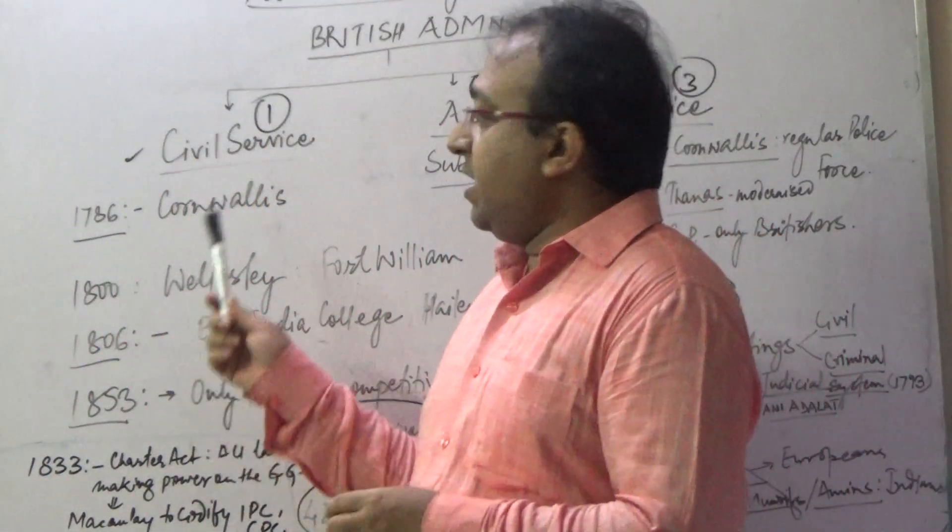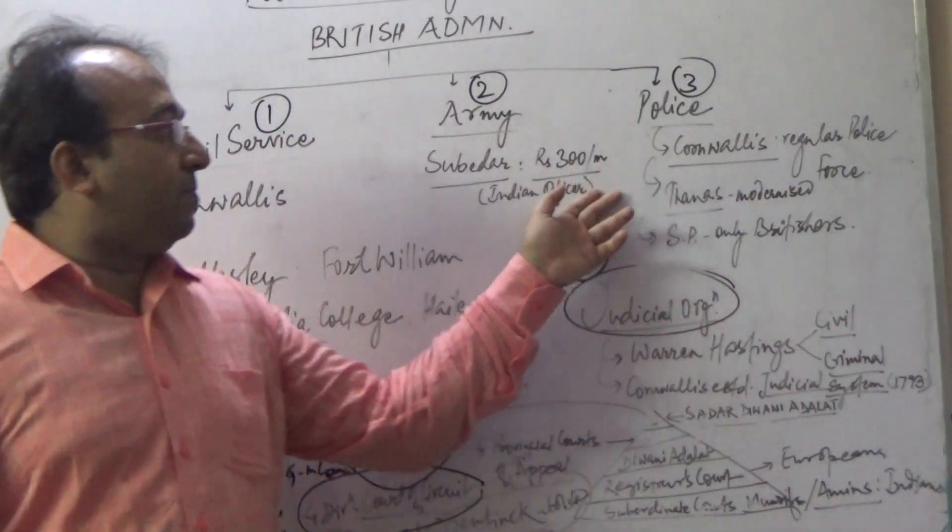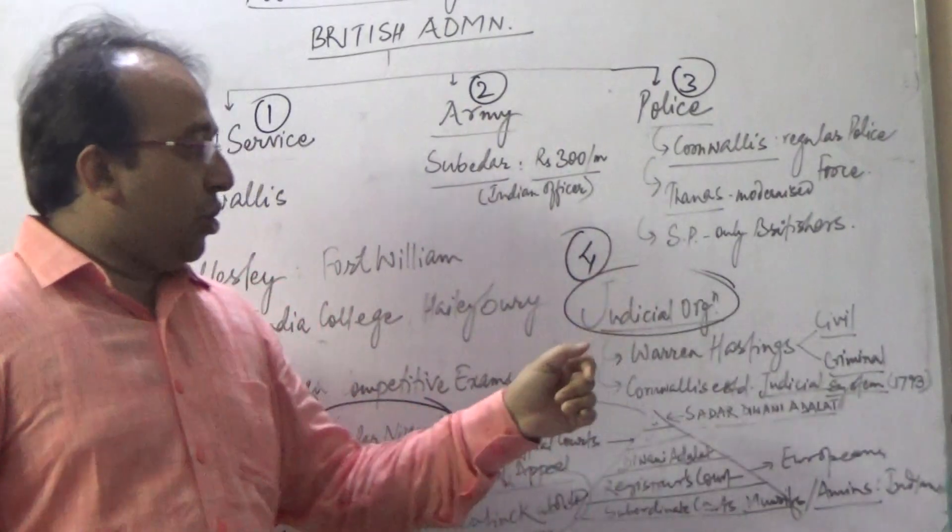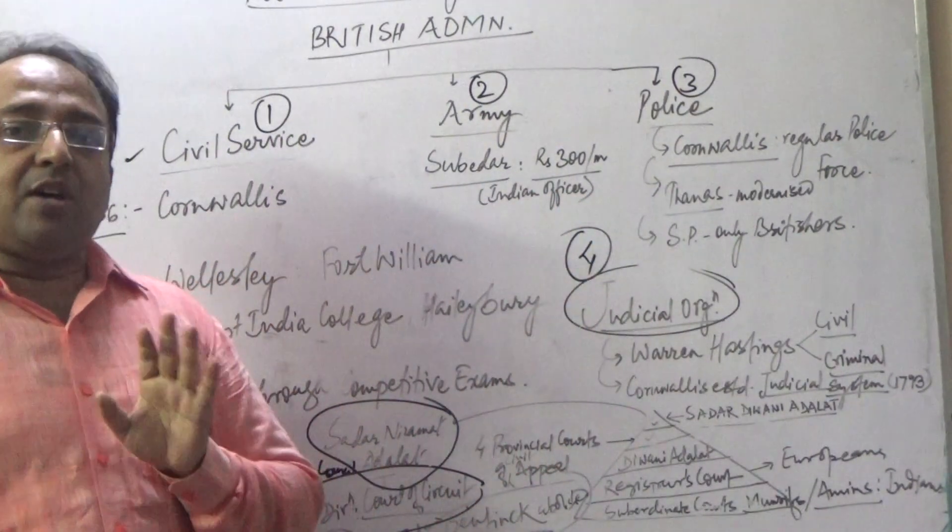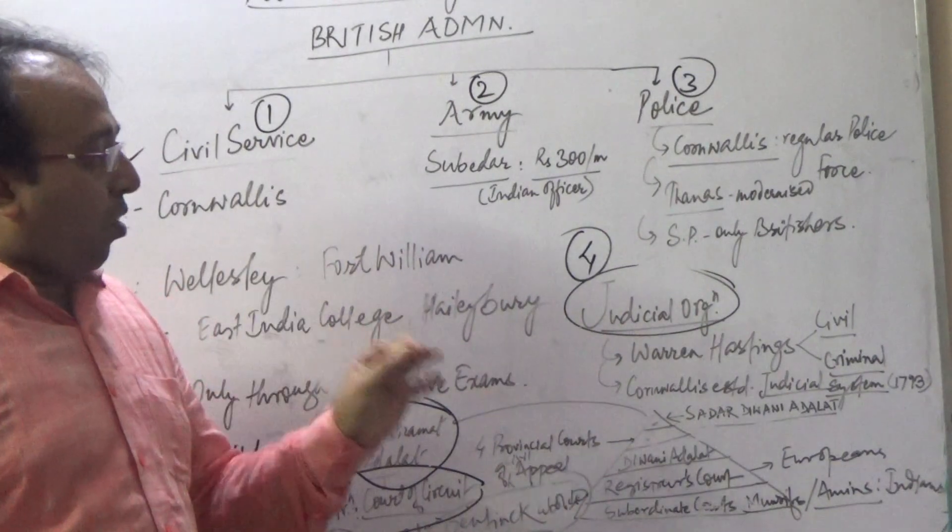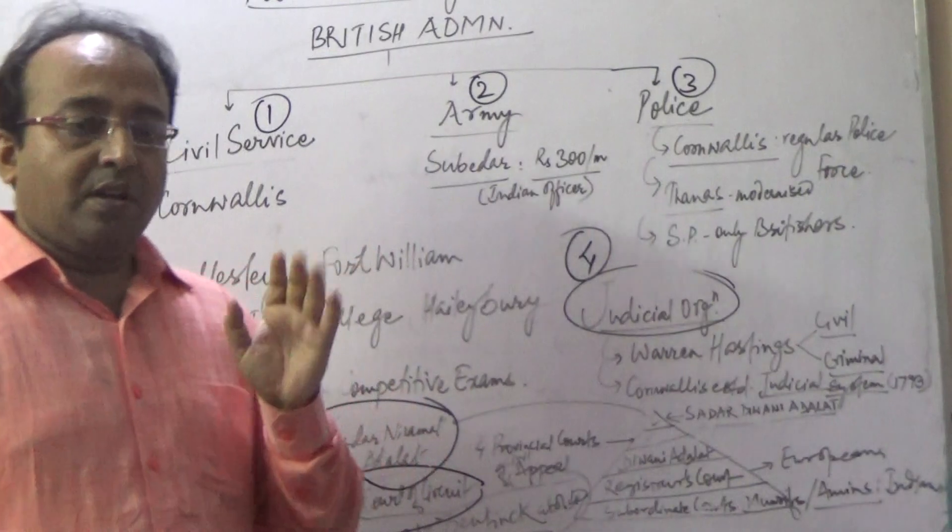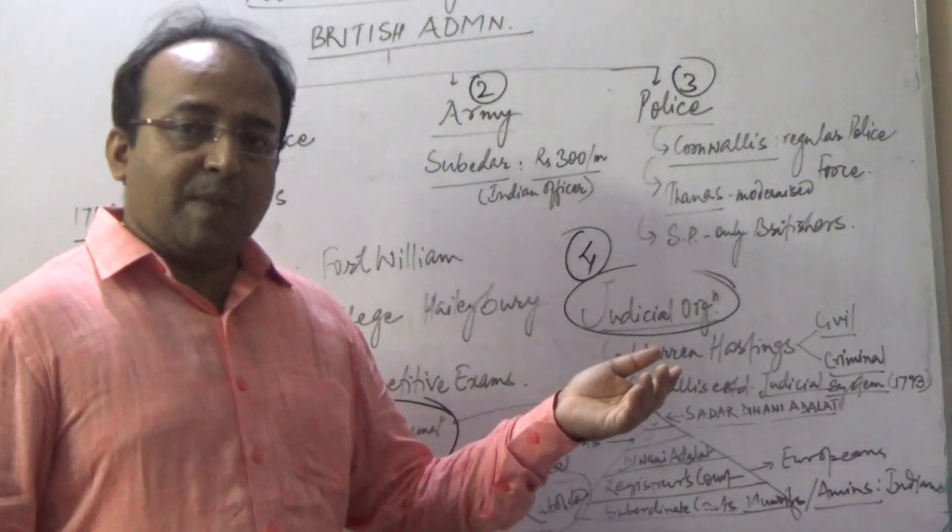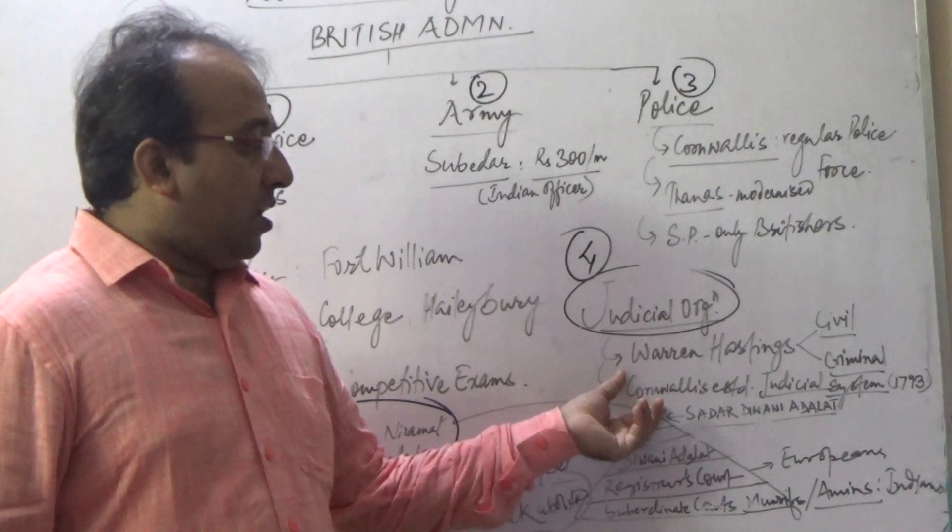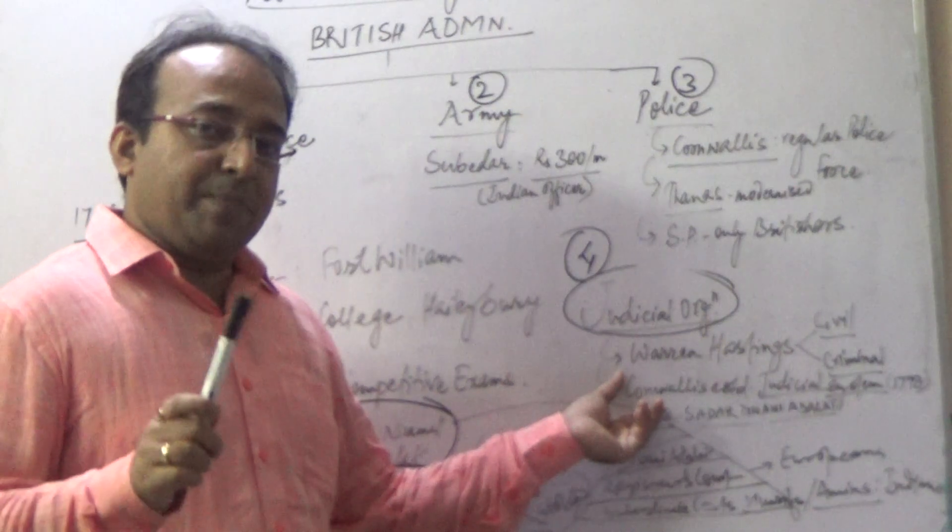You can see civil service - Cornwallis, police - Cornwallis, judicial system - Cornwallis. This question can be asked to you: Cornwallis played a role in establishing which all organizations. You have to remember only one fact. If a question is given to you in this manner that Cornwallis was the establishment of the civil and criminal court in India, you have to take the statement with a pinch of salt.